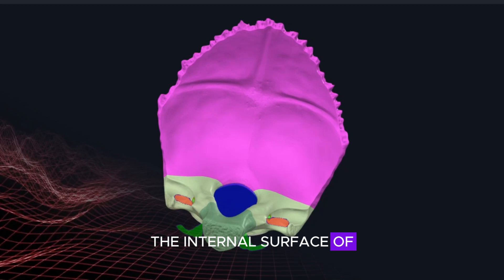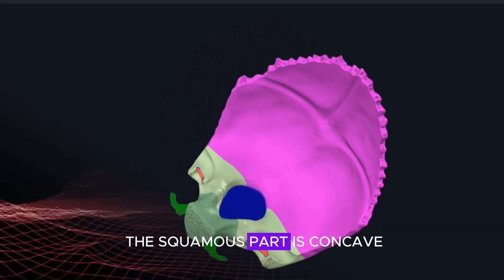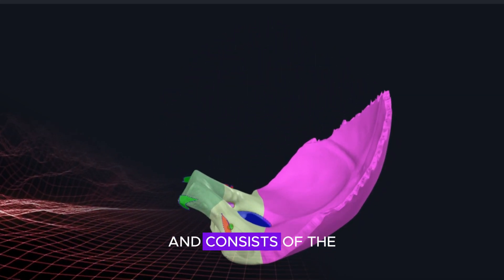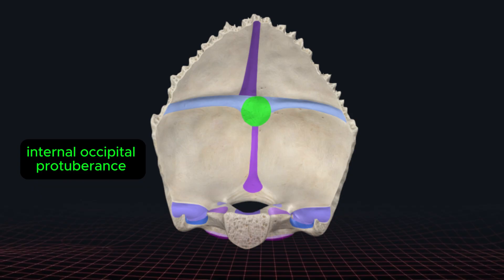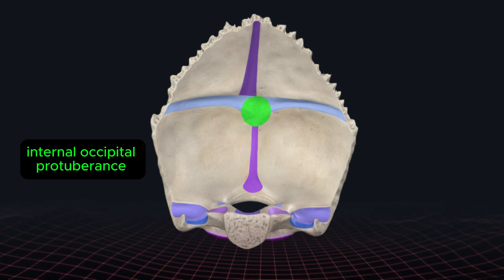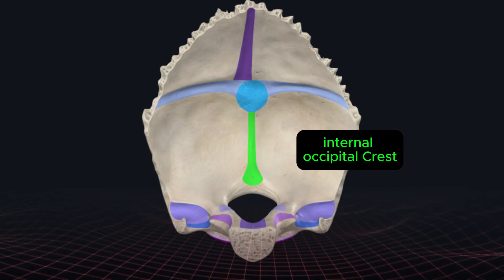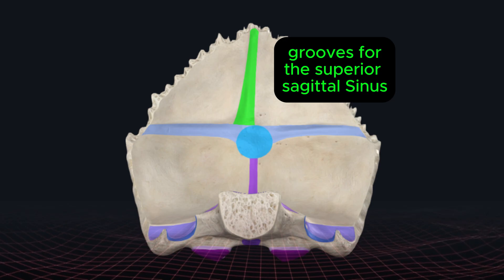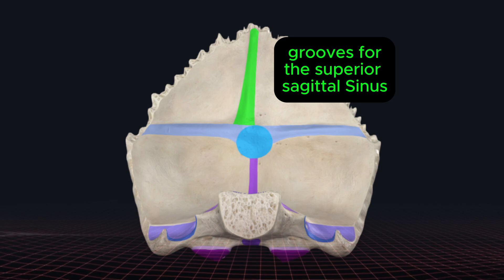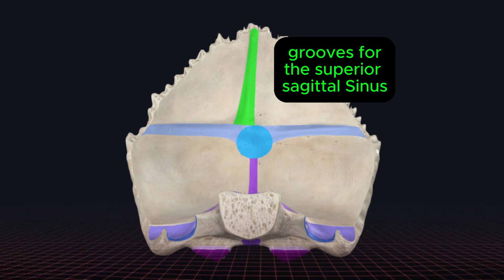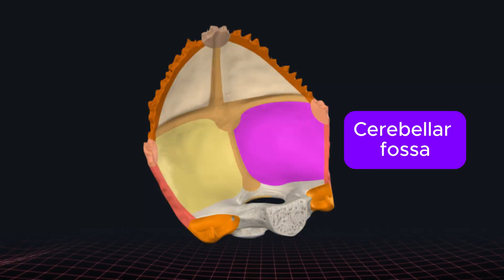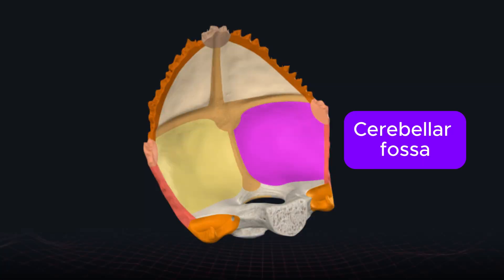The internal surface of the squamous part is concave and consists of the internal occipital protuberance, internal occipital crest, grooves for the superior sagittal sinus, and cerebral and cerebellar fossae.